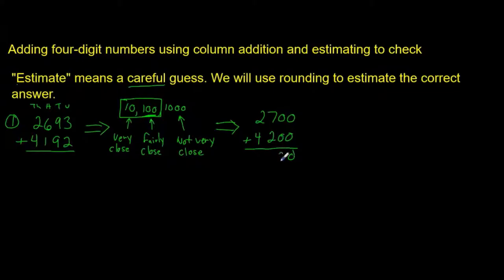Zero plus zero is zero. 700 plus 200 is 900. And 2,000 plus 4,000 is 6,000. So, our estimate is 6,900.